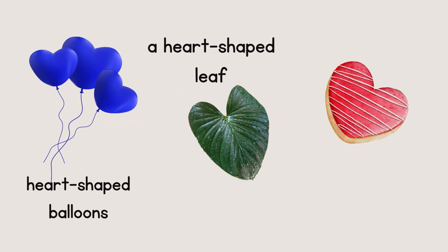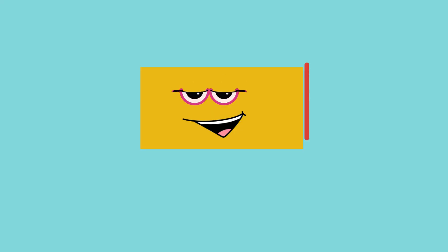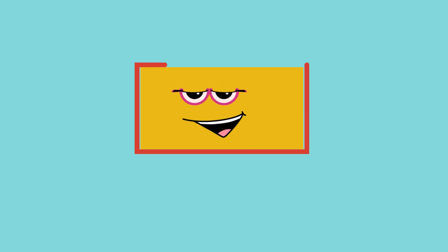It has two rounded curves and one point — it's a heart! Here you can see some heart-shaped balloons, a heart-shaped leaf, and a heart-shaped cookie. Now you know that a heart has two curved sides and one pointy side. Which shape do you see now? It has four sides and four corners.